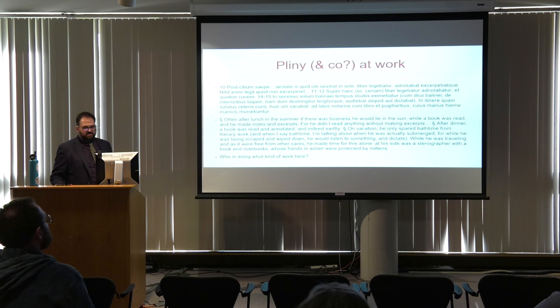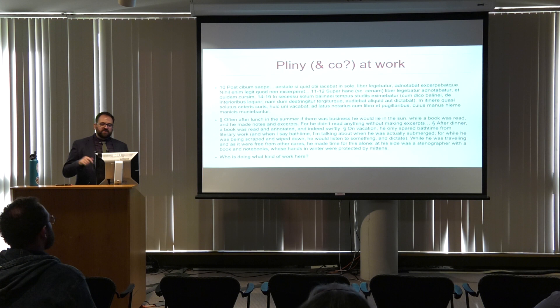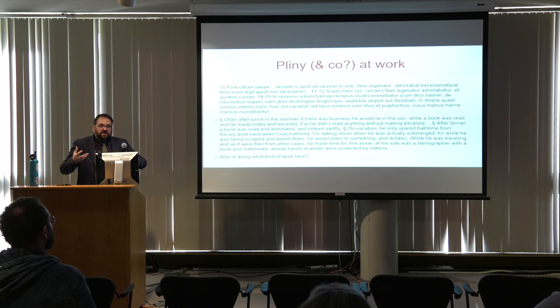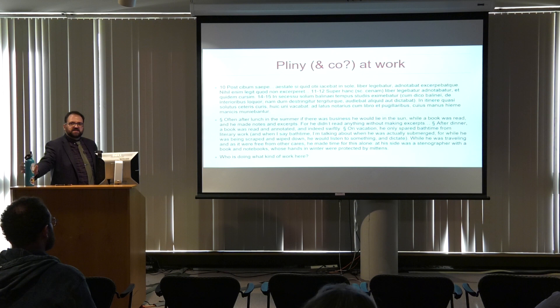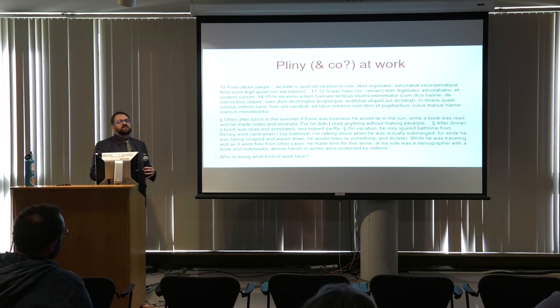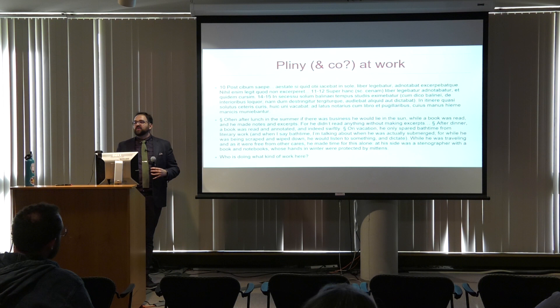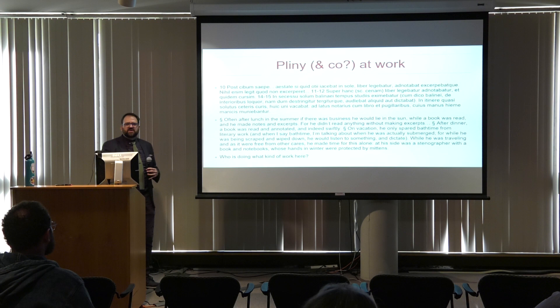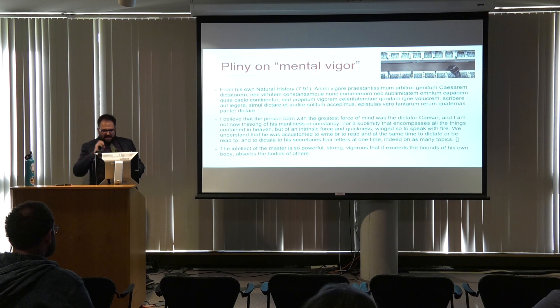This is what the historian Daniel Padilla-Peralta has called the production of sharp ontological distinctions. Roman masters spend a lot of time worrying about how to insist that enslaved people and enslavers are fundamentally different — precisely because it's obviously not true. So reading, which happens all the time with enslaved people present, is actually something where the Roman enslaving class is really worried about maintaining power and control. This is another way the particulars of slavery are fundamentally shaping what's happening when Romans are reading.